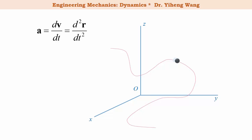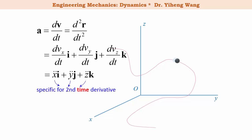Similarly, for the acceleration, which is defined as dv over dt, or the second time derivative of the position, acceleration equals to dvx dt i plus dv y dt j plus dv z dt k, or x double dot i plus y double dot j plus z double dot k. The double dots are specific for the second time derivative of a function.